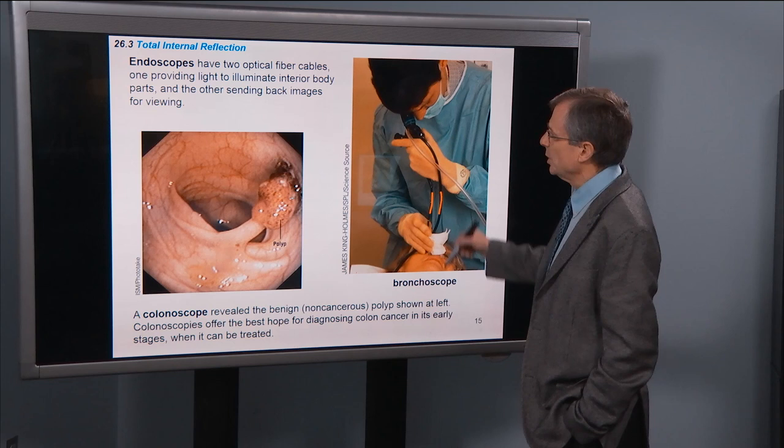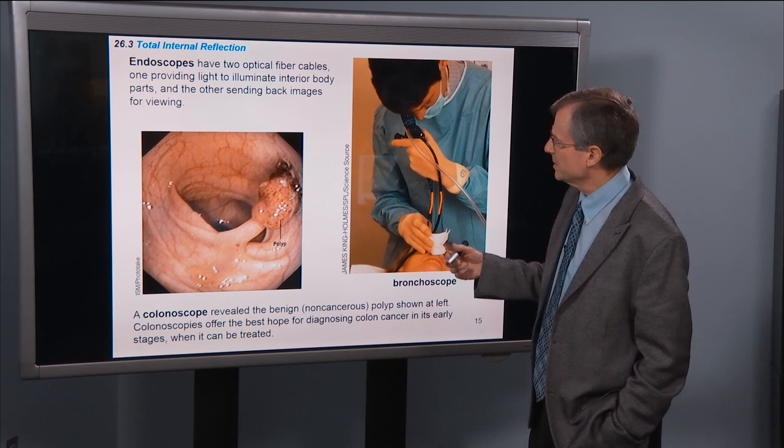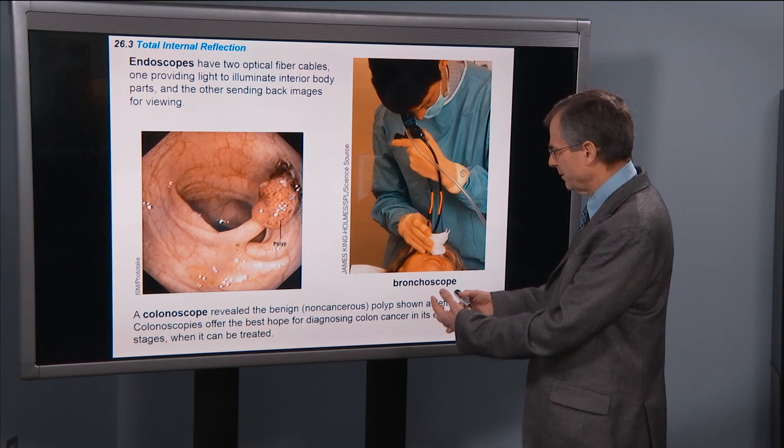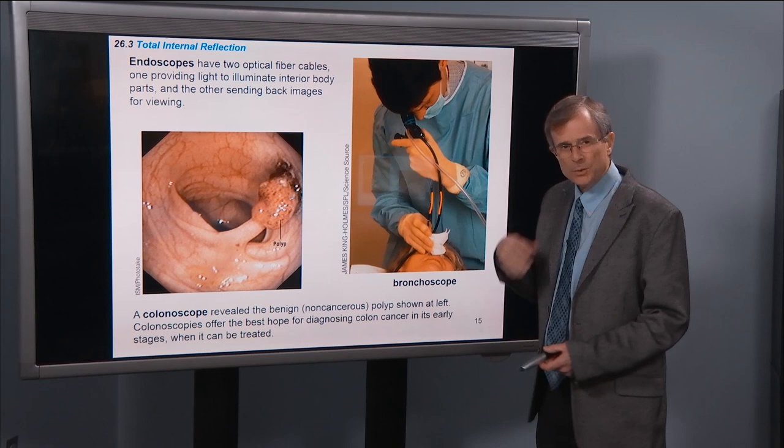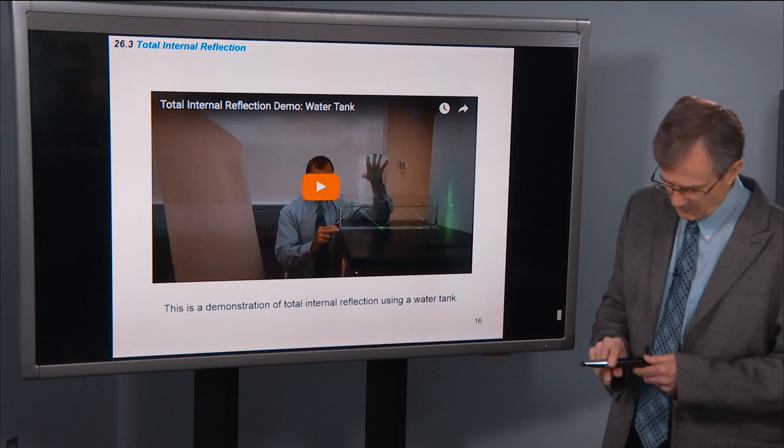One application of optical fibers is these endoscopes. There are two optical fiber cables, one providing light to illuminate interior body parts, and the other sending back images for viewing. And so you're able to view, that's a disgusting image I've got to say, polyps and colonoscopes, etc. But these fibers channel light and use the principle of total internal reflection in order to operate.